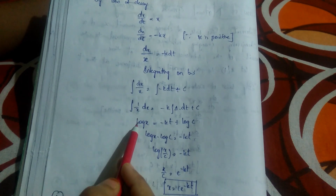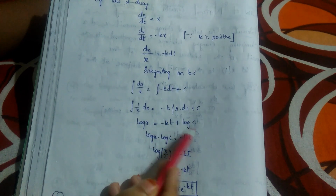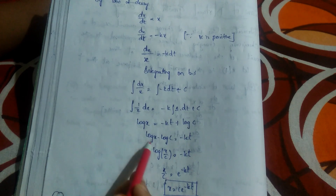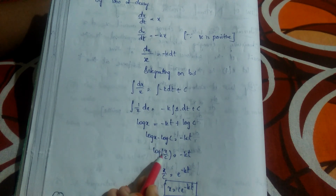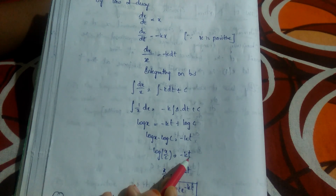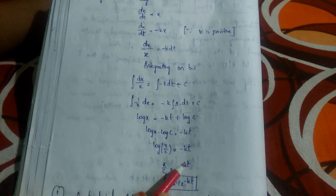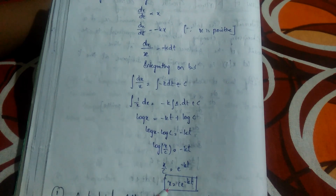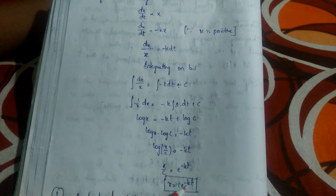Integration of 1/x is log x, equals minus k·t plus C, written as log C. Sending log C to the left: log x minus log C equals minus kt, so log(x/C) equals minus kt. Removing the logarithm: x/C equals e^(minus kt), so x equals C·e^(minus kt). For growth: x = C·e^(kt); for decay: x = C·e^(minus kt).